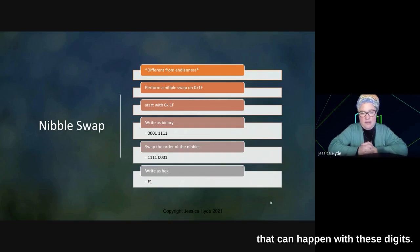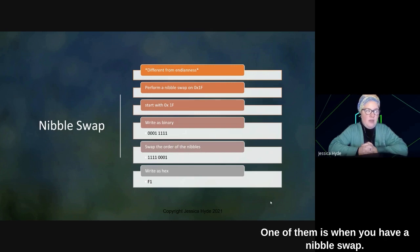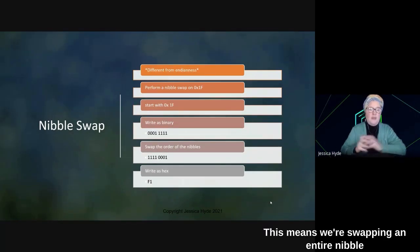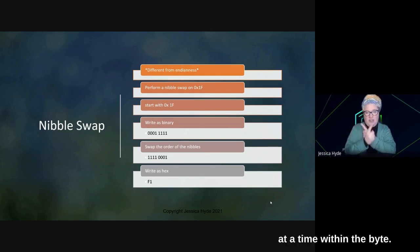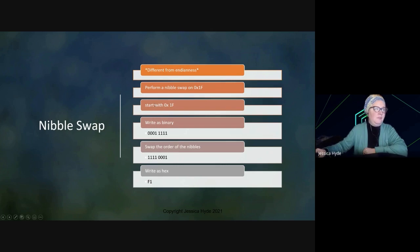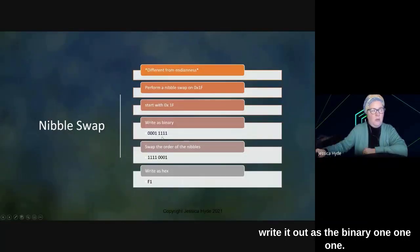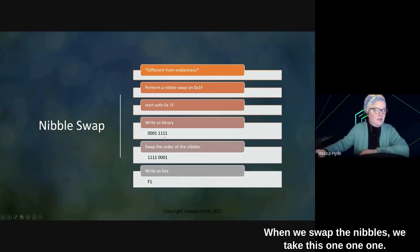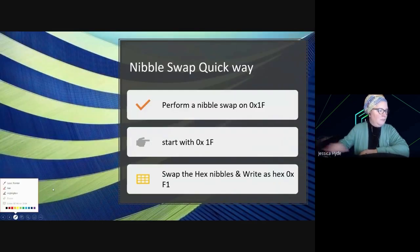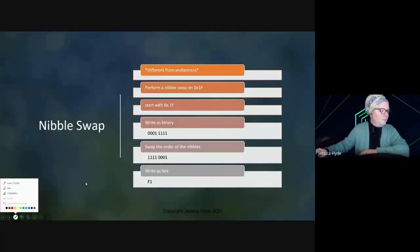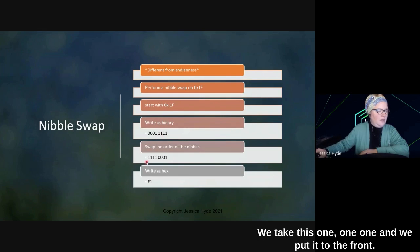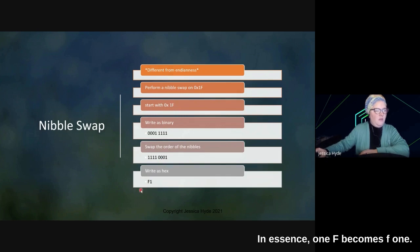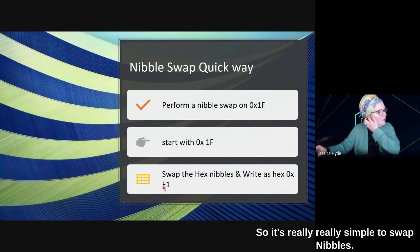Now, there are lots of transformations that can happen with these digits. One of them is when you have a nibble swap. This means we're swapping an entire nibble at a time within the byte. This is different from Endianness. If we start with the hexadecimal 1F, we can write it out as the binary 0, 0, 0, 1, 1, 1, 1, 1. When we swap the nibbles, we take this 1, 1, 1, 1, and put it to the front. Then we take the 0, 0, 0, 1, and move it to the end. In essence, 1F becomes F1. So, it's really simple to swap nibbles.